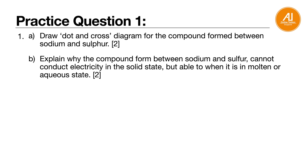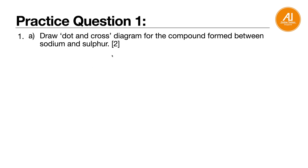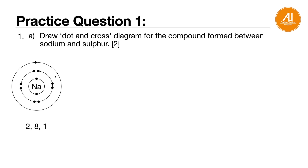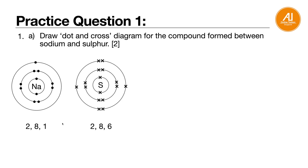Next: draw the dot and cross diagram for the compound formed between sodium and sulfur. Sulfur is 2,8,6. To figure out the final compound, sodium is Na+ (group 1) and sulfur is group 6, so it's S2-. You get NaS, and when you cross the numbers you get Na2S. So you will need 1 sulfur and 2 sodium.